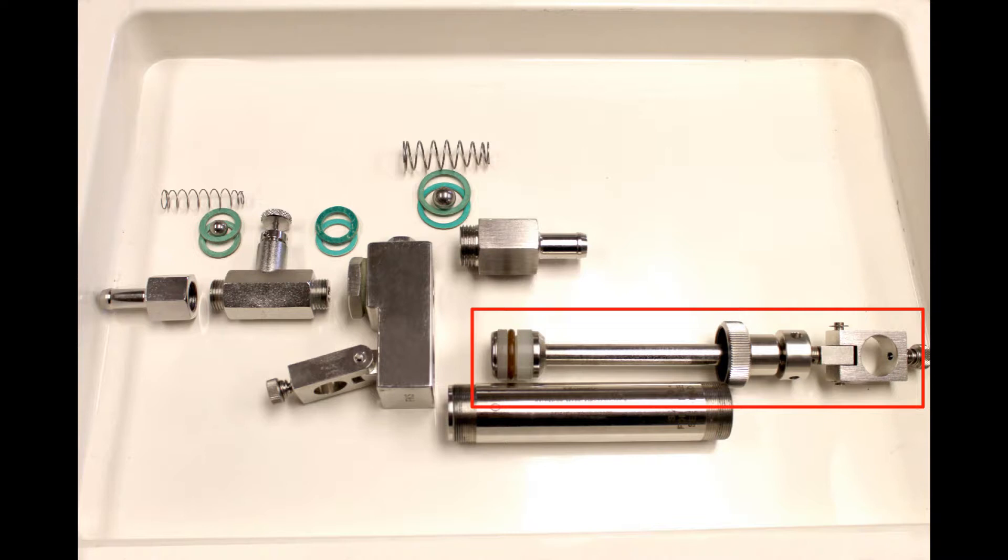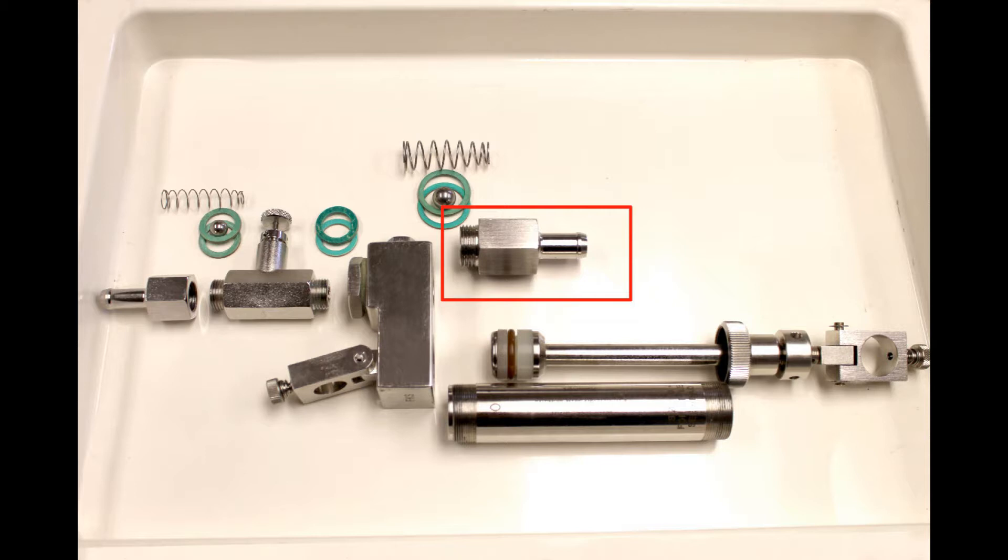Here is your complete piston rod assembly. This is your O-ring adapter with individual O-ring. Your lower intake valve.